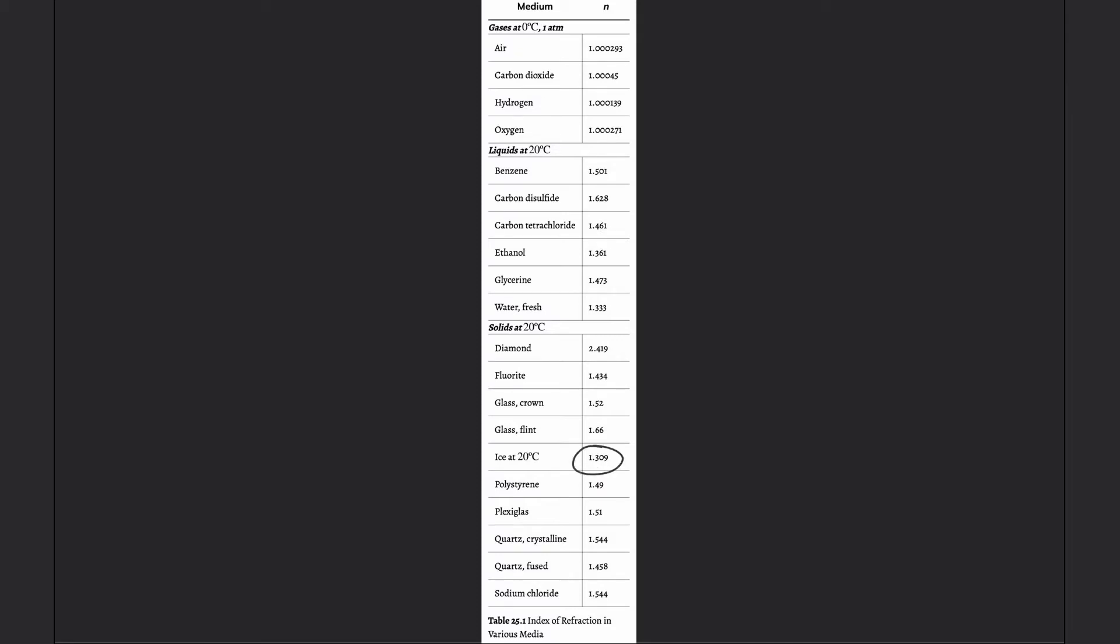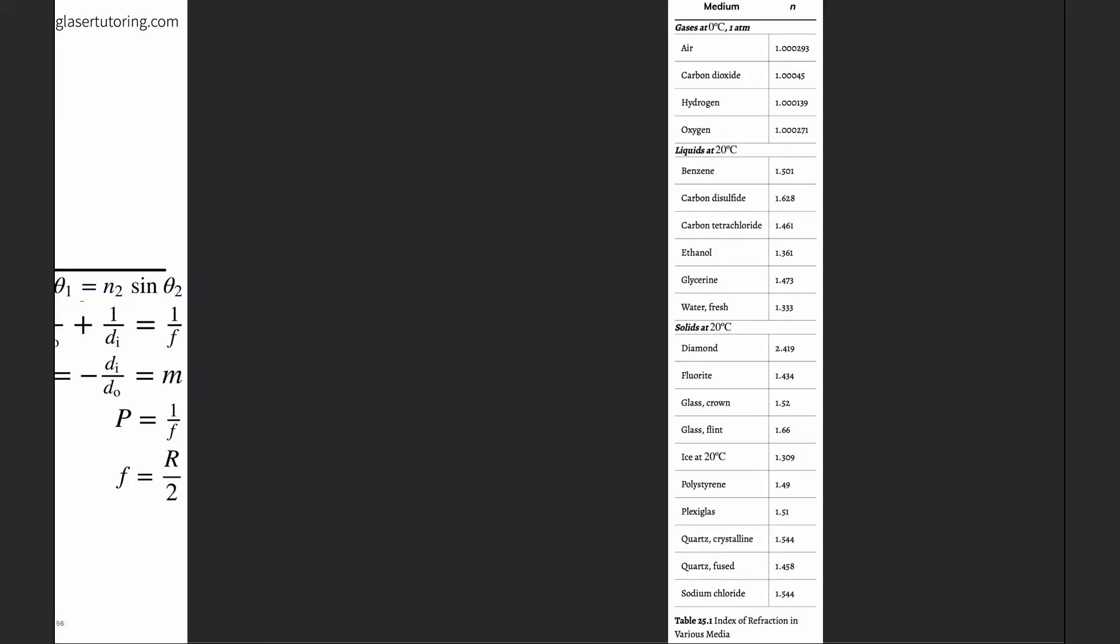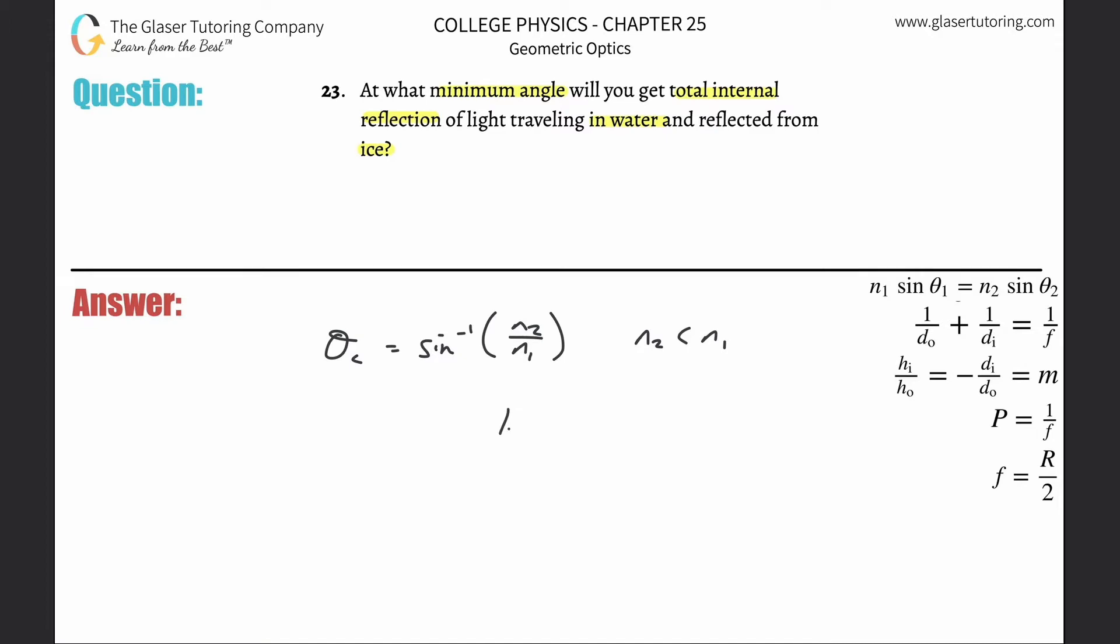All right, so which one is less? Ice is. So you're going to put that one on the top. Okay, 1.309. So we got 1.309 over the 1.333.